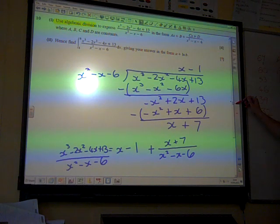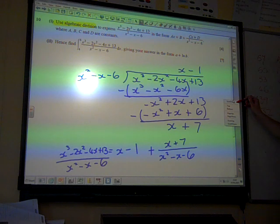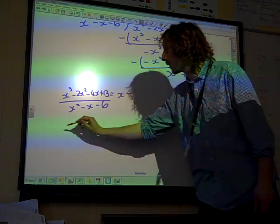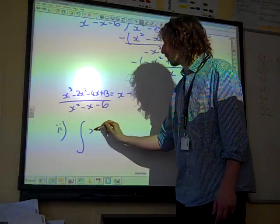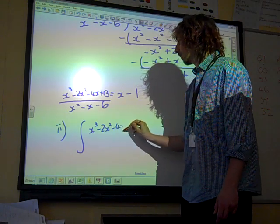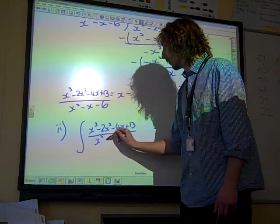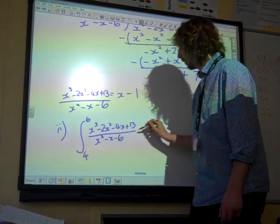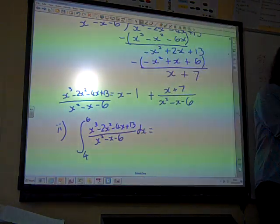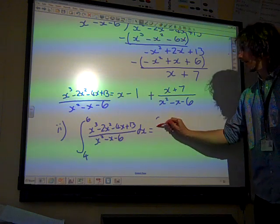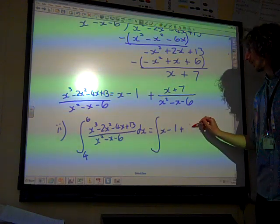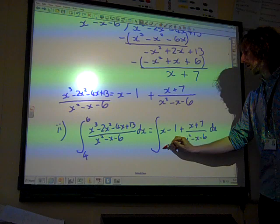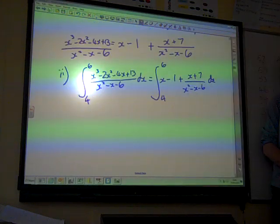So now we're on to part 2. Hence, find that integral. Giving your answer from the form A plus LNB. So we now want to integrate that between what were the limits? From 4 to 6. So the word hence was in there, so we've got to use that to start with. Hence means that this is the integral of X minus 1 plus X plus 7 over X squared minus X minus 6.